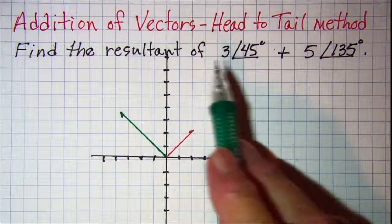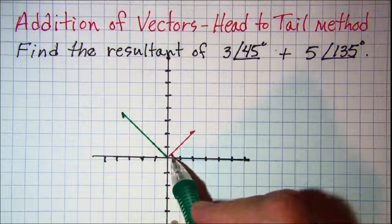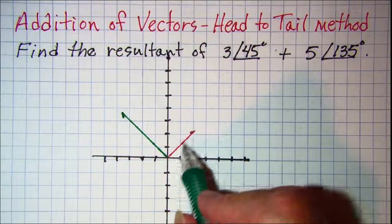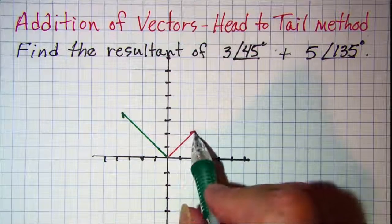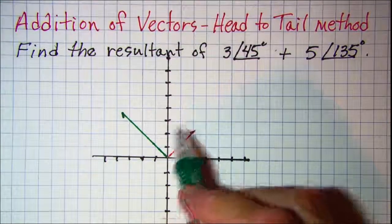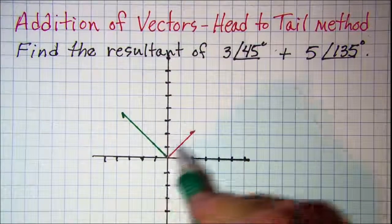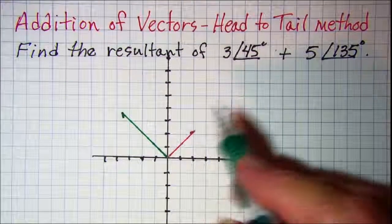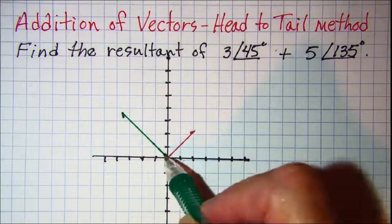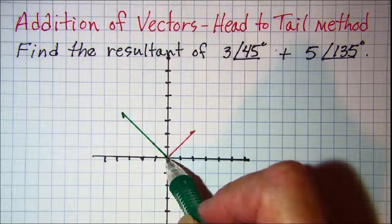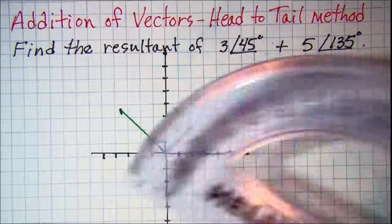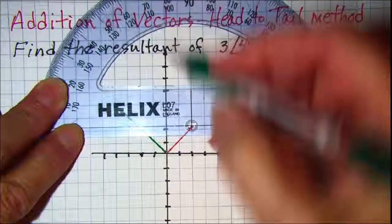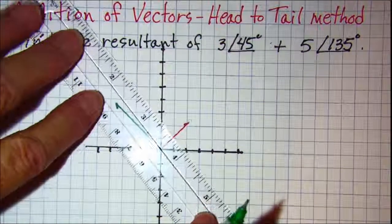So for the head to tail method for adding vectors, I'm going to start with this red one and leave it there, with the tail at the origin and the head right here. But then my green vector, my 5 at 135, I'm going to move that vector so that the tail of that vector is here at the head of the red vector. Now this method is not real accurate. The 135 degrees, then I need that to be 5 quarters.